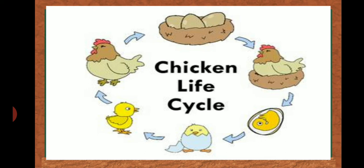When the baby fully develops, after that it hatches out, meaning the baby comes out from the egg. And it starts growing and becomes like its parent.